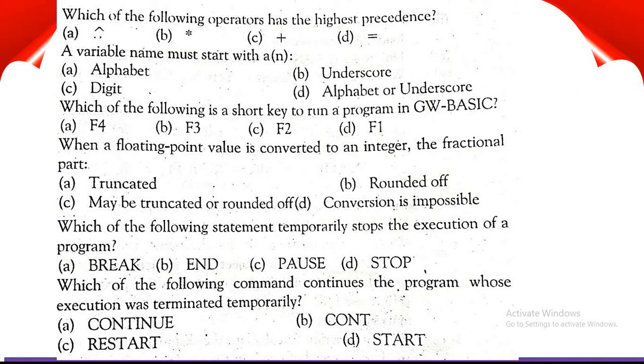Next MCQ is: When a floating point value is converted to an integer, the fractional part: Option A Truncated, option B rounded off, Option C May be truncated or rounded off, Option D Conversion is impossible. The correct option is option B rounded off.